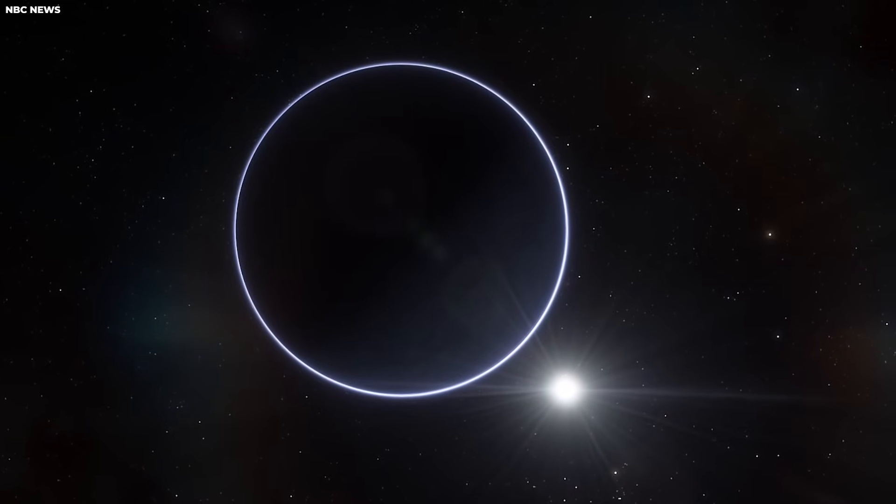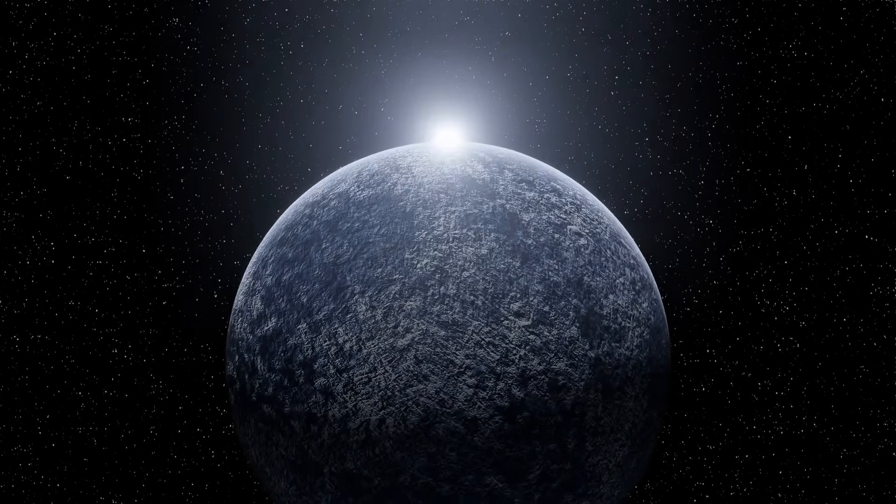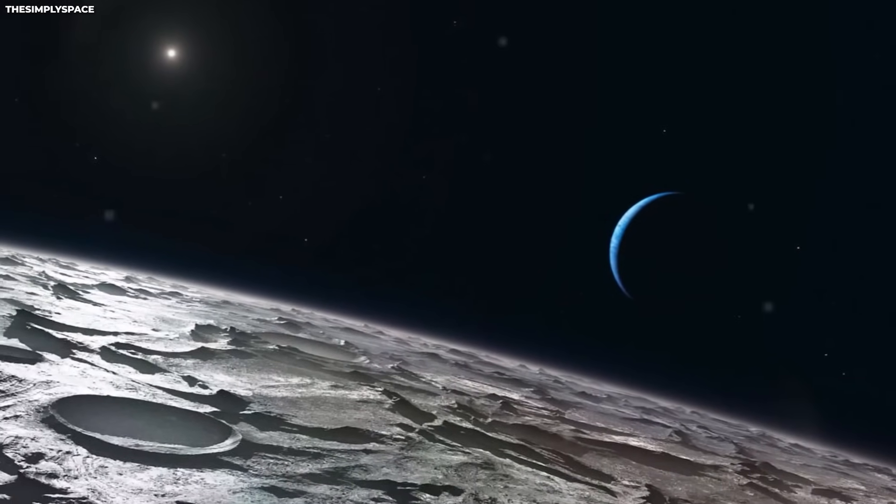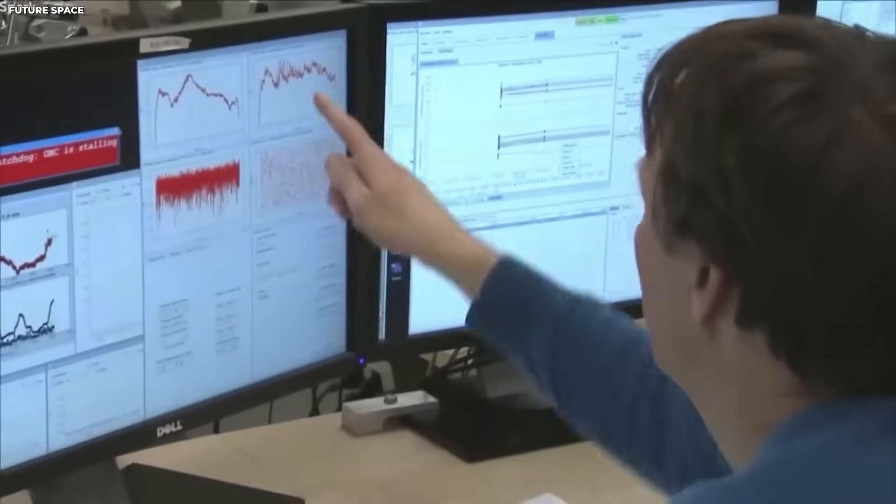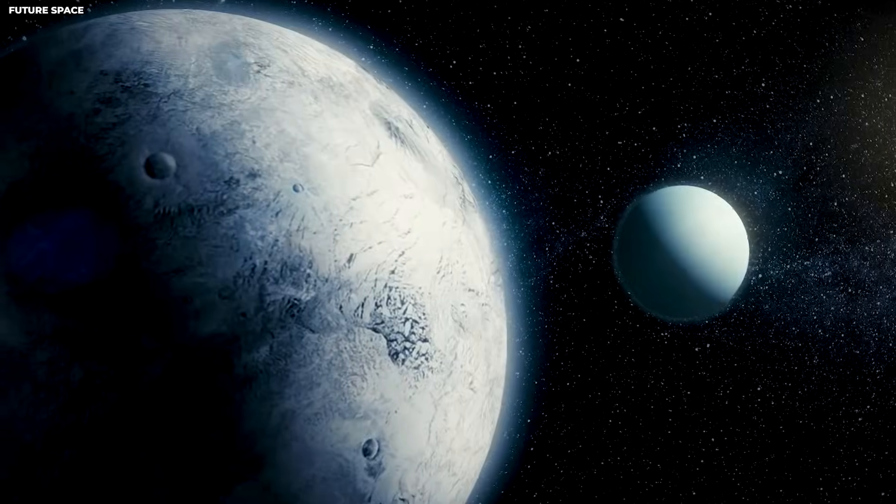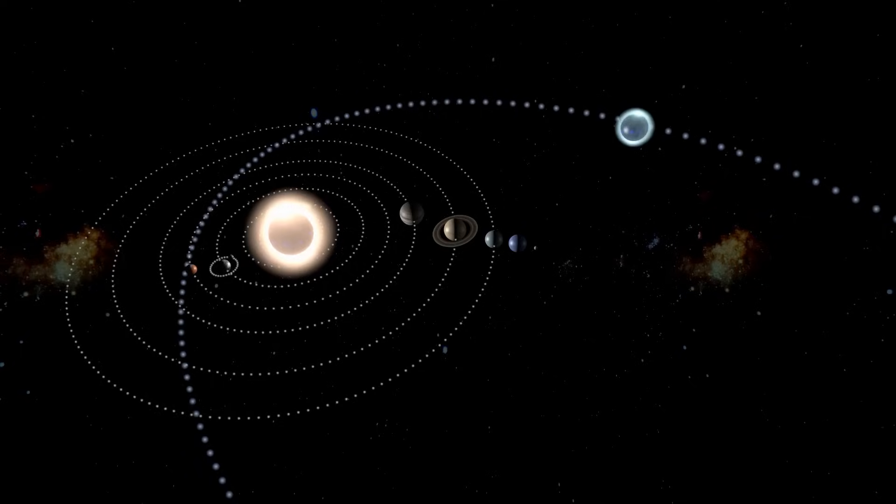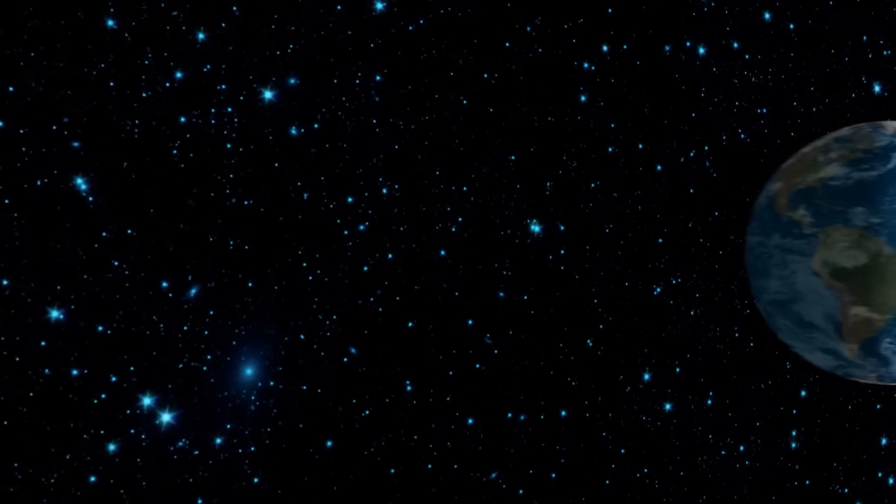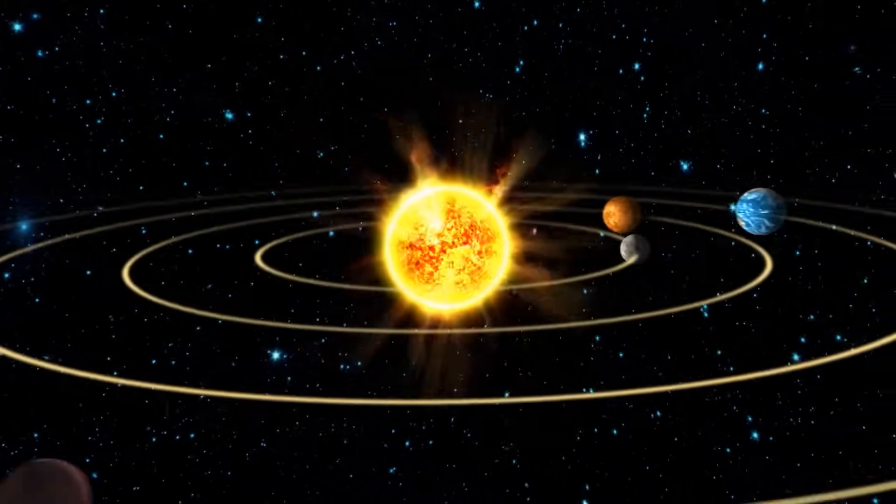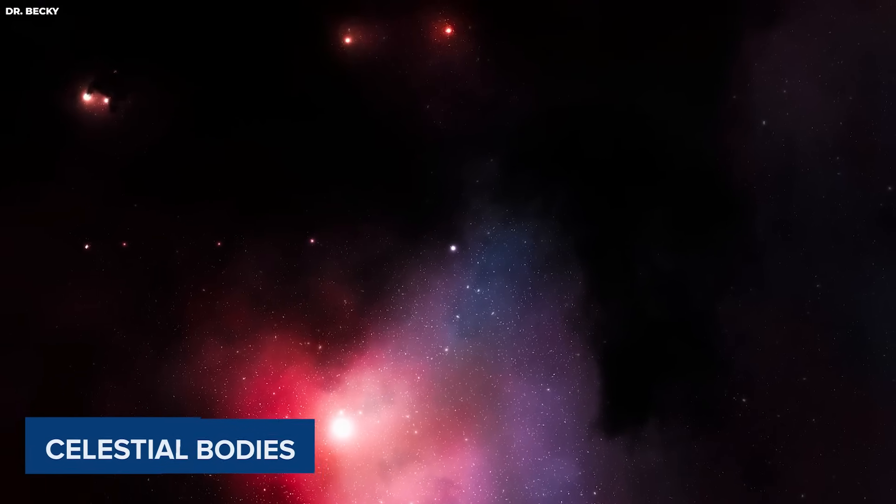The JWST's observations of exoplanets have the potential to revolutionize our understanding of these distant worlds. The telescope can analyze the atmospheres of exoplanets, providing insights into their composition and potential habitability. By studying exoplanet atmospheres, scientists hope to detect signs of life or habitable conditions. Moreover, the JWST has been imaging objects within our own solar system, including planets, moons, asteroids, and comets. These observations contribute to our knowledge of the solar system's formation and evolution.